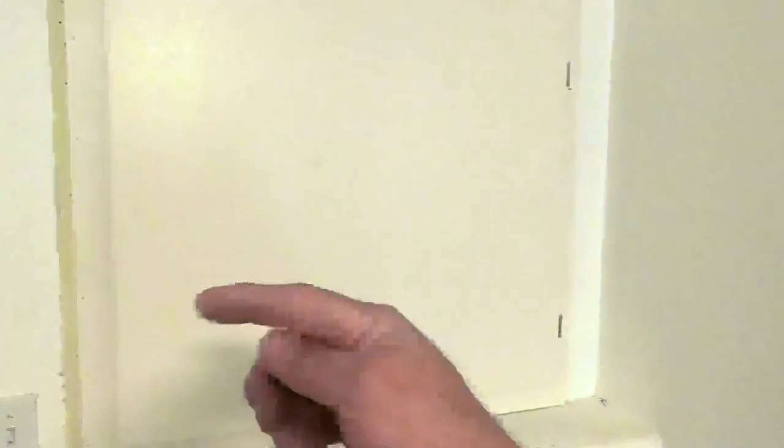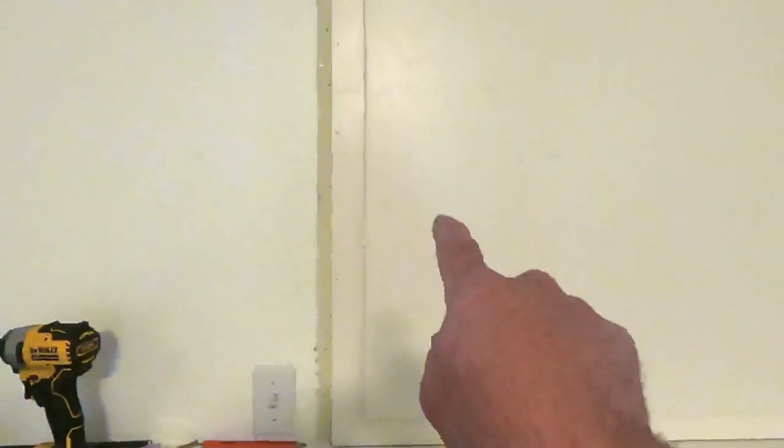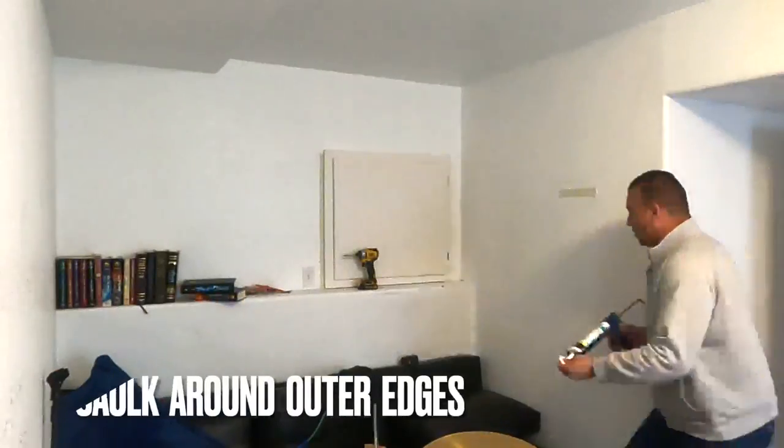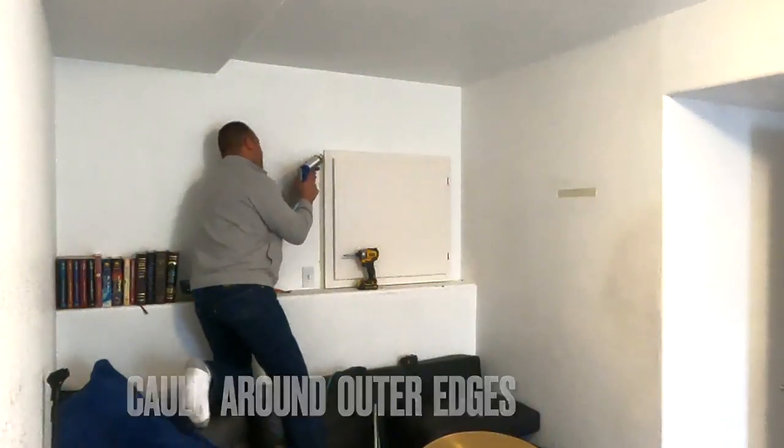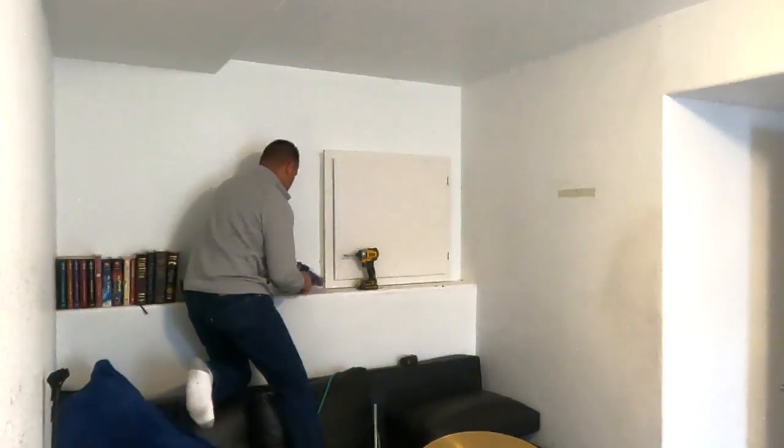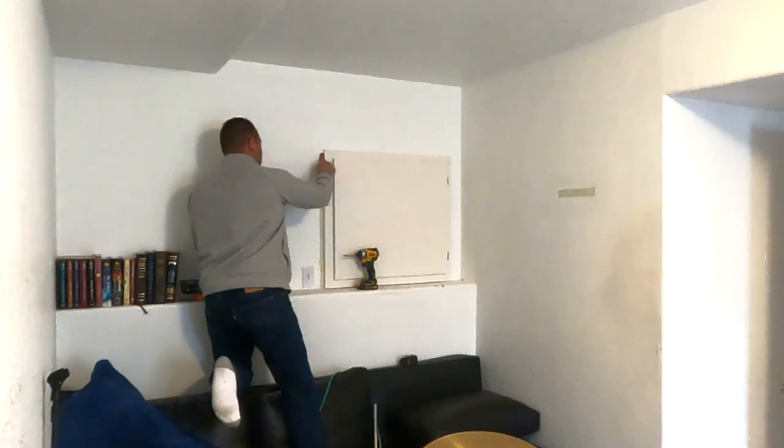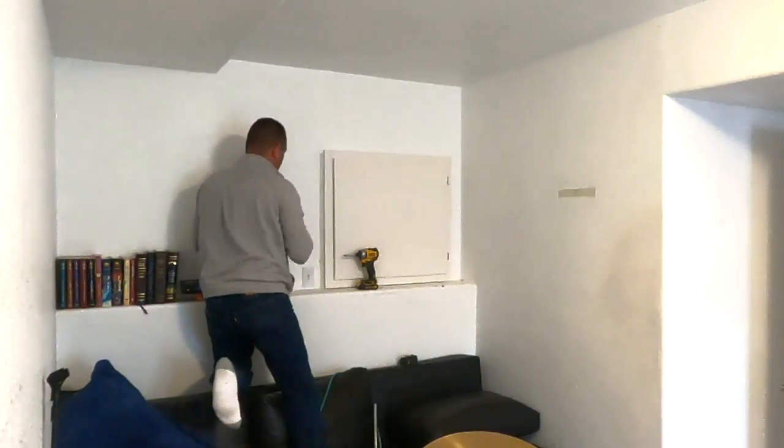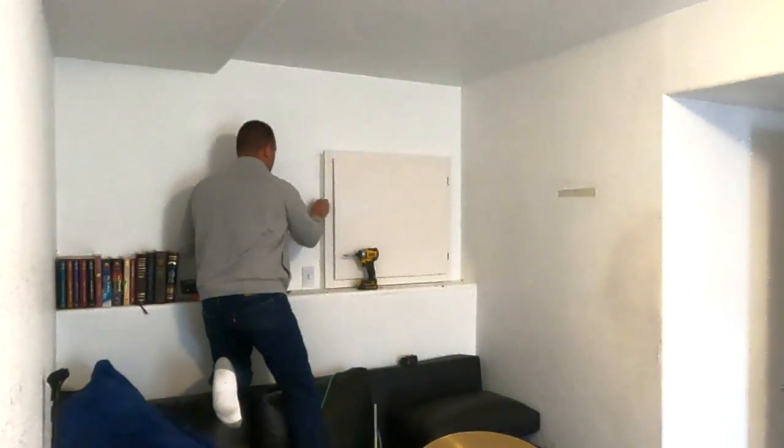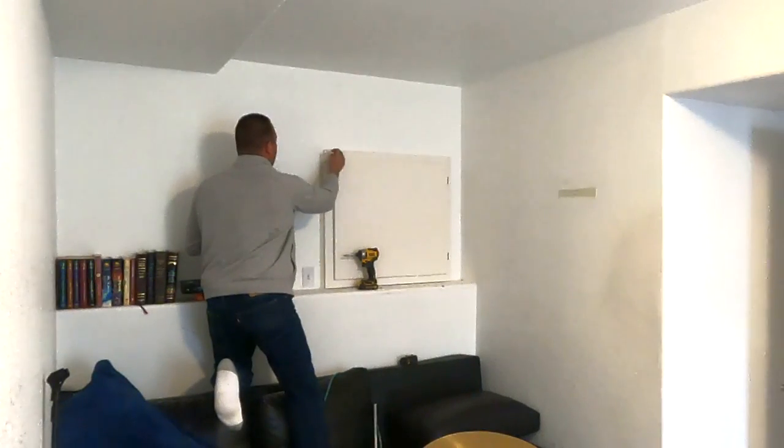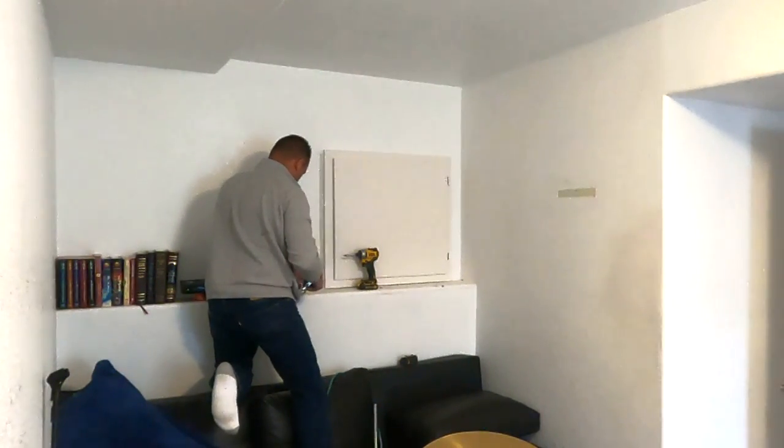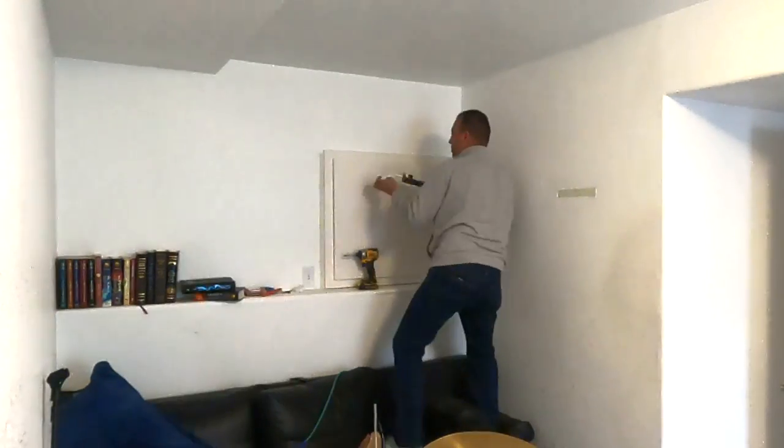So now we have the door swinging in the right direction. Before it was swinging the outside right swing, so now we have a left. So that's how it should be. And everything's looking good. So next we're going to put our handle on and then we're going to caulk all the way around it and this thing's done.